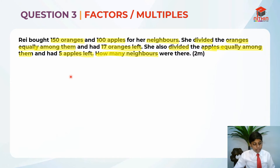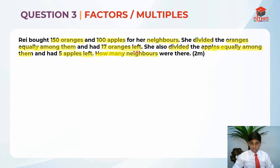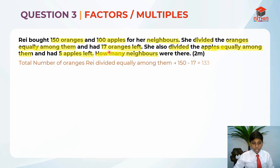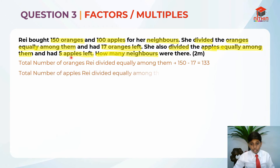What we need to do is find how many oranges and how many apples she gave her neighbours, because we only know how many oranges and apples she had left. To find how many oranges she gave her neighbours, we take 150 minus 17, which gives us 133 oranges. To find the number of apples, we do 100 minus 5, and we get 95. So 95 is the number of apples she gave to her neighbours.